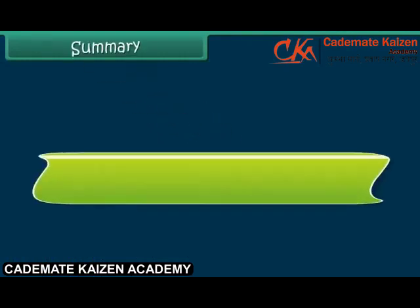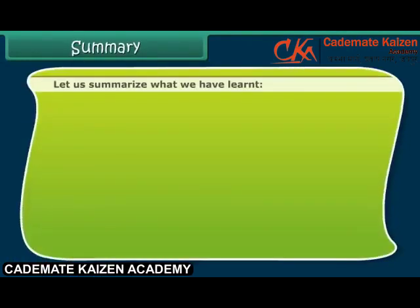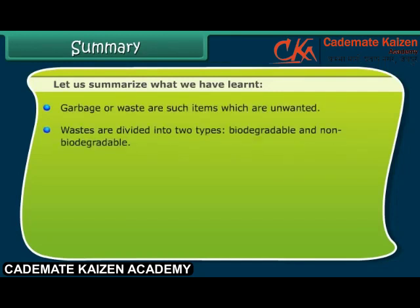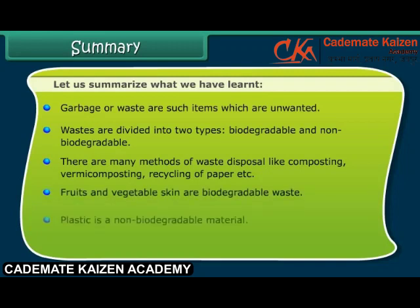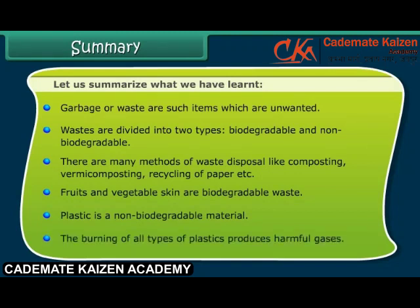Let us summarize what we have learned. Garbage or waste are such items which are unwanted. Wastes are divided into two types: biodegradable and non-biodegradable. There are many methods of waste disposal, like composting, vermicomposting, and recycling of paper. Fruits and vegetable skin are biodegradable waste. Plastic is a non-biodegradable material. The burning of all types of plastics produces harmful gases.